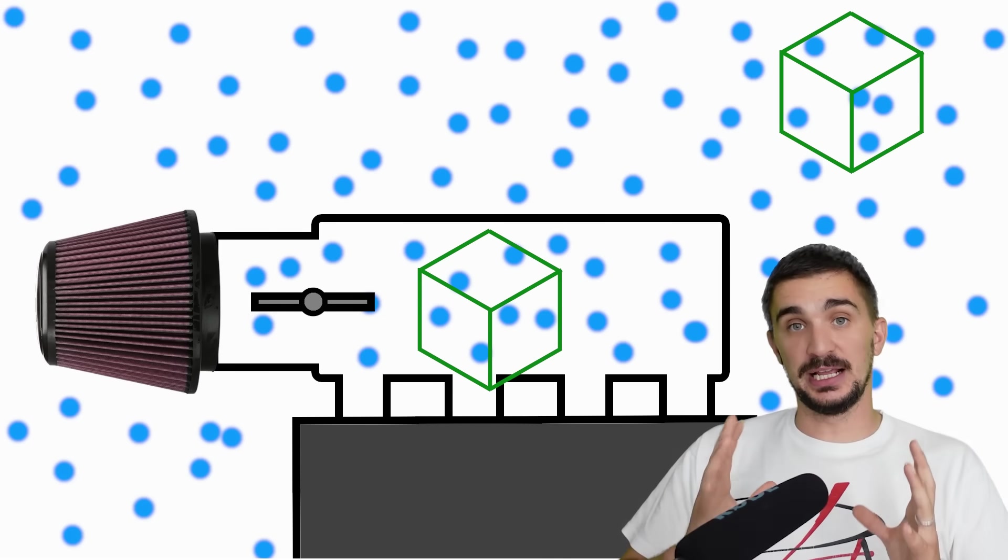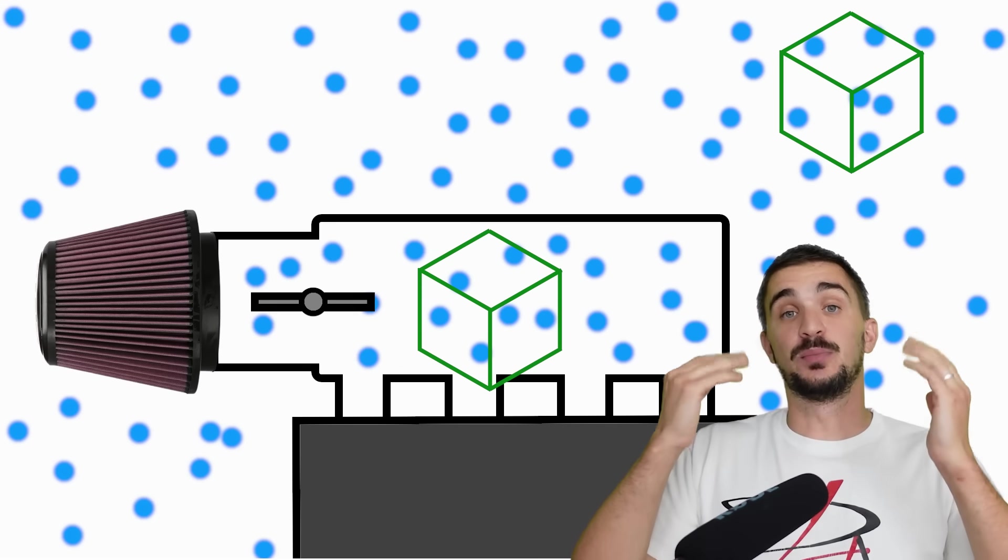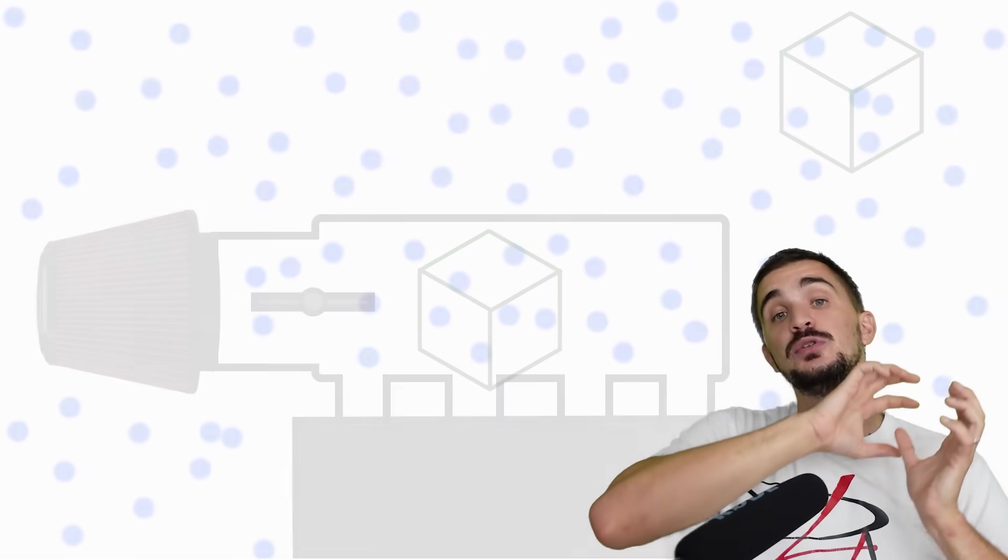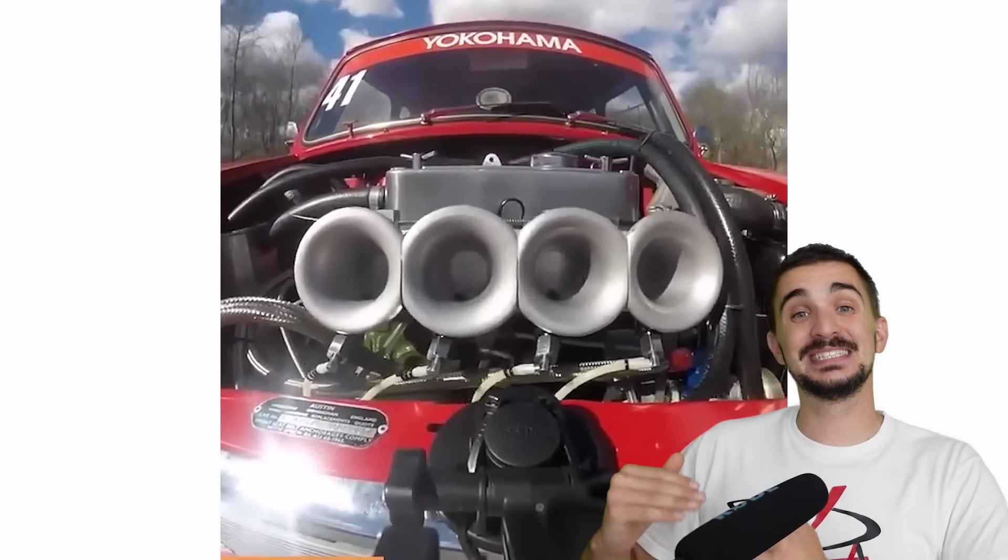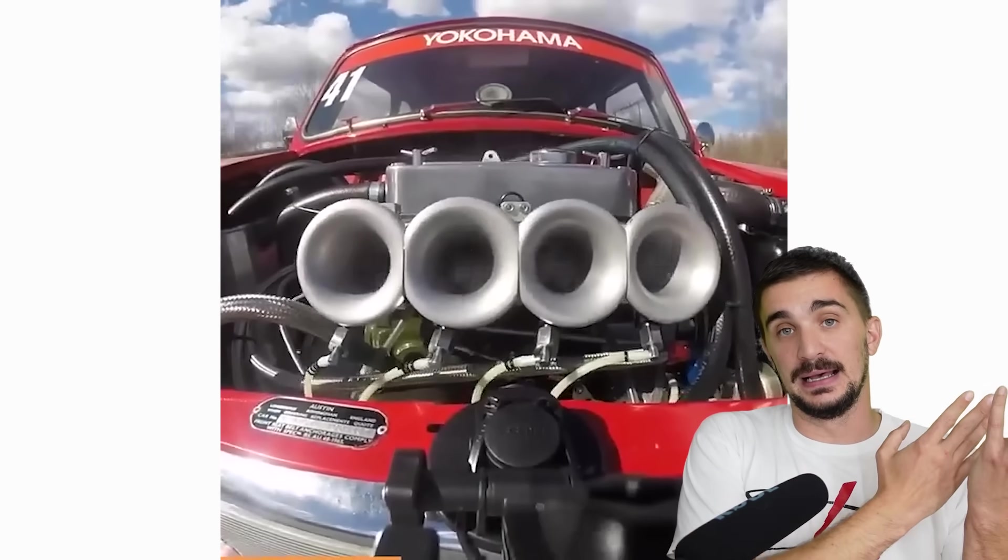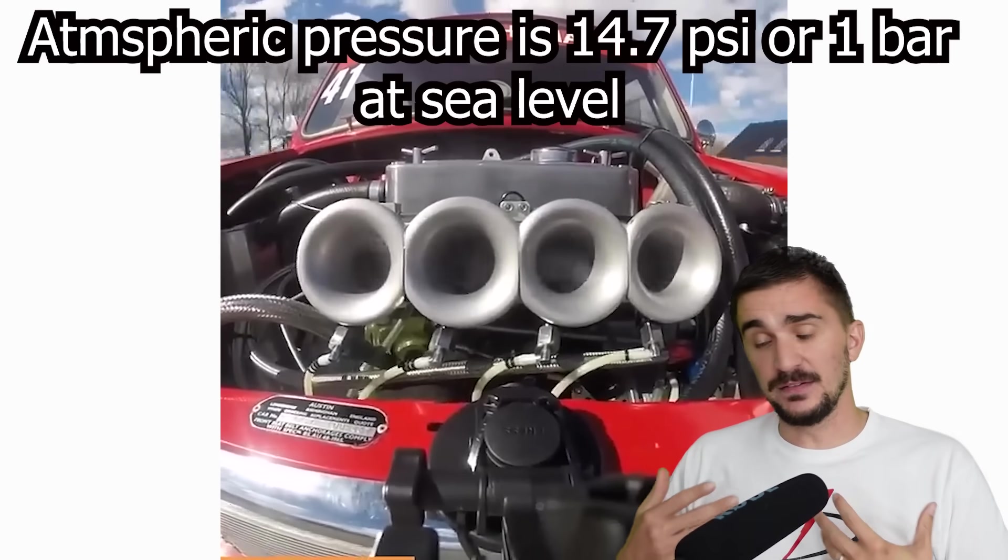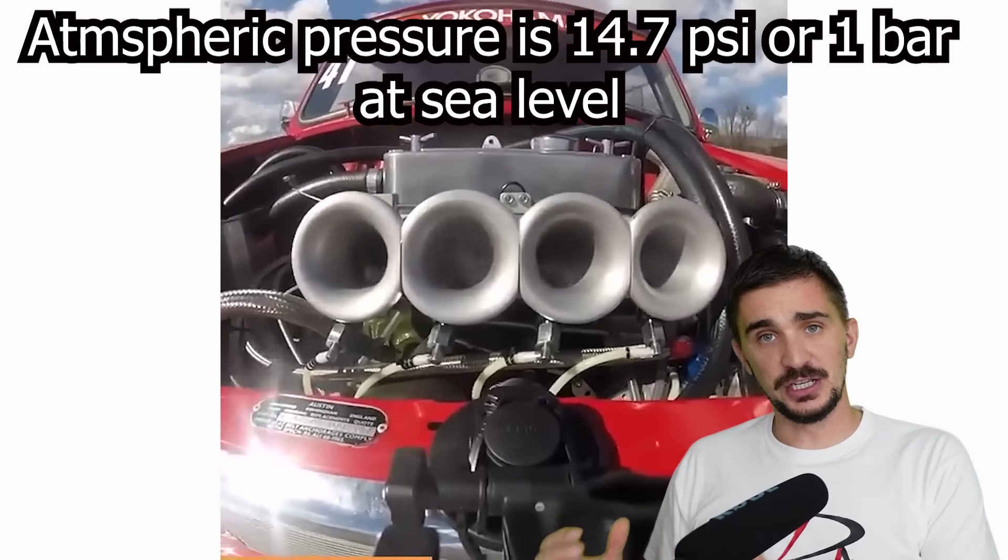Now, a naturally aspirated engine is called naturally aspirated because it relies on nature, the pressure of Earth's atmosphere, to push air into the engine. A naturally aspirated engine can never achieve significantly higher manifold pressure than the air pressure in the atmosphere, which is 14.7 psi if you're at sea level and a bit lower if you're at a higher elevation.